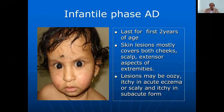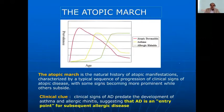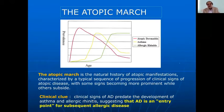All of you know about the atopic march — the natural history of atopic manifestations characterized by a typical sequence of progression of clinical signs. The important clinical clue is that clinical signs of atopic dermatitis predate the development of asthma and allergic rhinitis, suggesting that atopic dermatitis is an entry point for subsequent allergic diseases.